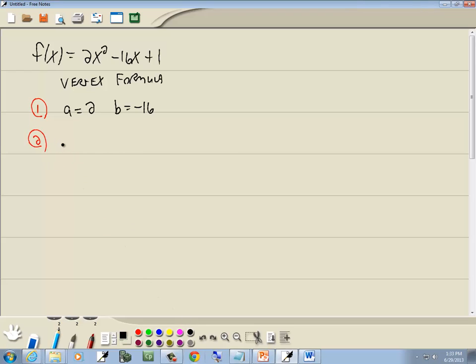Step 2, find -b over 2a. So we'll plug in the b we just found. We got negative and b we said was -16. So negative negative 16. 2 times a, and a we said was 2. Well, negative negative gives us positive 16. 2 times 2 is 4. 16 divided by 4 is 4. Now this is the x part of our vertex.